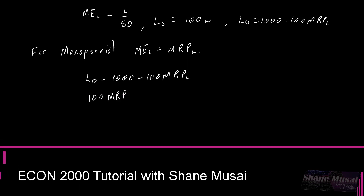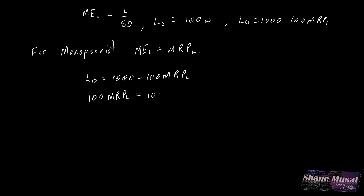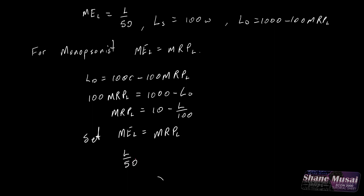From the demand equation: 100 times MRPL equals 1000 minus L, so the MRPL is equal to 10 minus L over 100. We know that the MRPL equals the marginal expense of labor for a monopsonist. So we set L over 50 equal to the marginal revenue product, which is 10 minus L over 100.